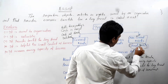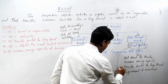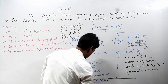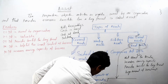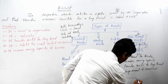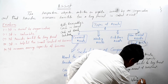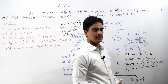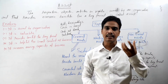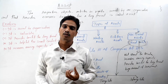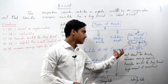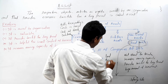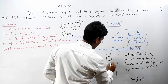Non-current or fixed assets are divided into two types: tangible fixed assets and intangible fixed assets. Tangible fixed assets are those which can be seen and touched by an organization. Examples are land, building, furniture, etc.